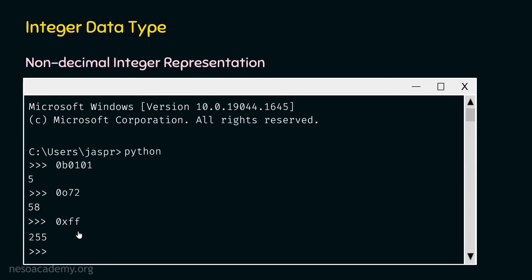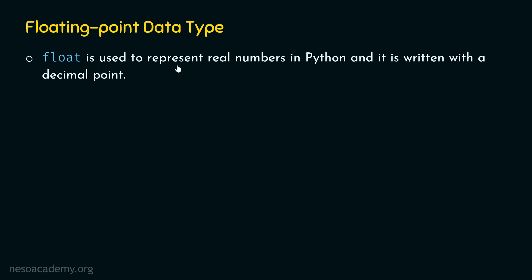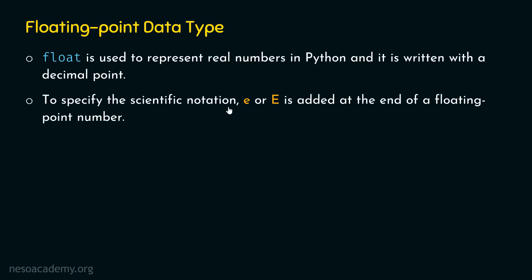This is how we can represent non-decimal integers and understand what happens when we print them. We are done with integer data type and are now ready to understand floating point data type. Float in Python is used to represent real numbers and is written with a decimal point — that is the difference between an integer and a floating point number. Small e or capital E is added at the end of a floating point number to specify scientific notation.